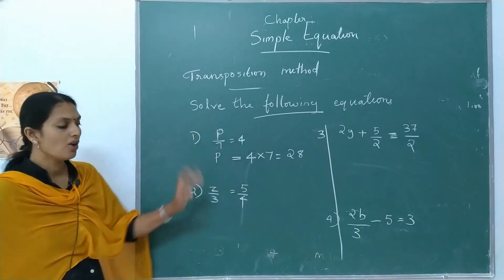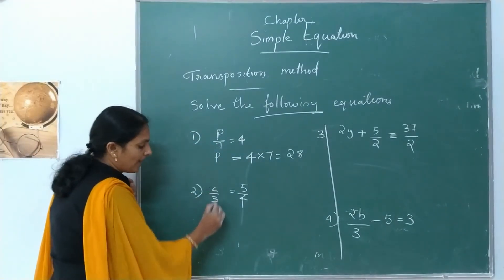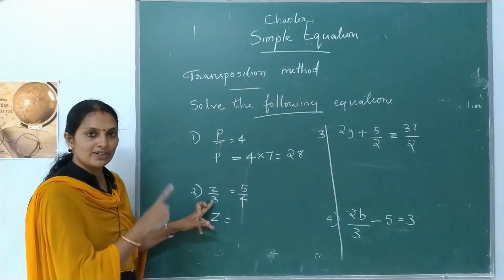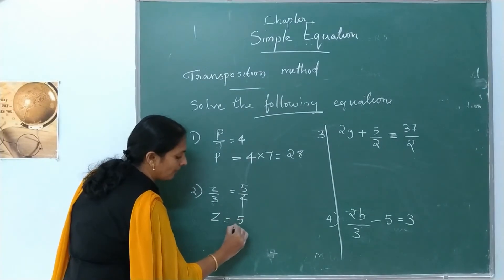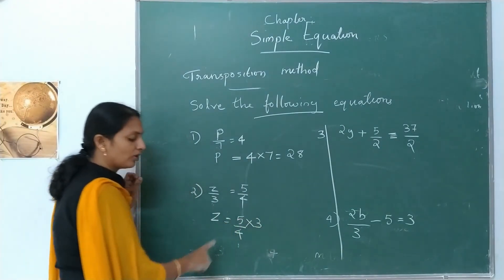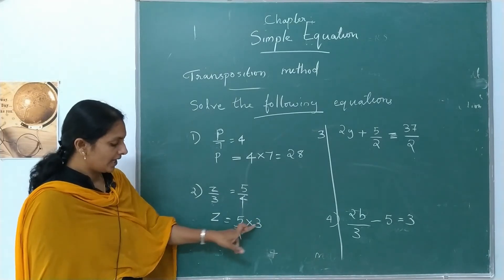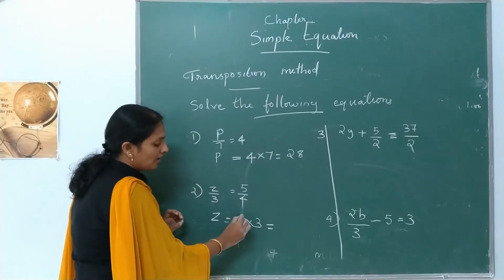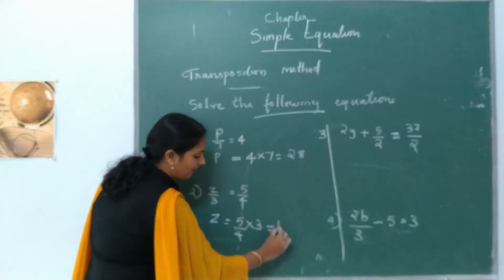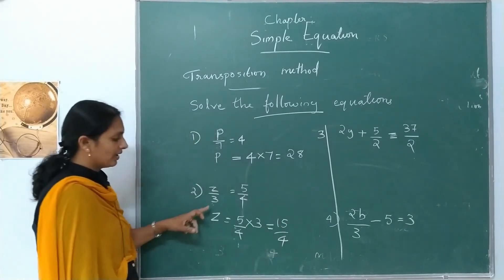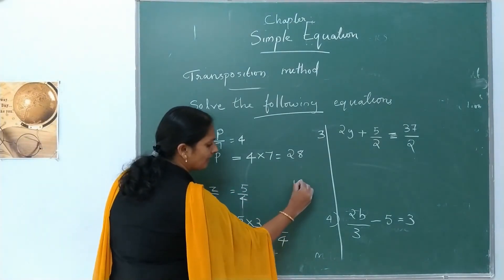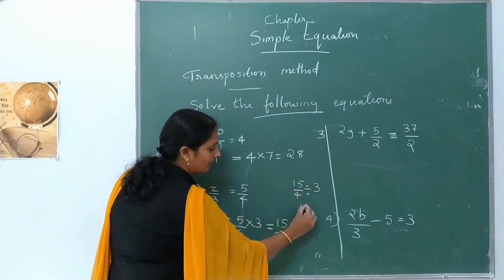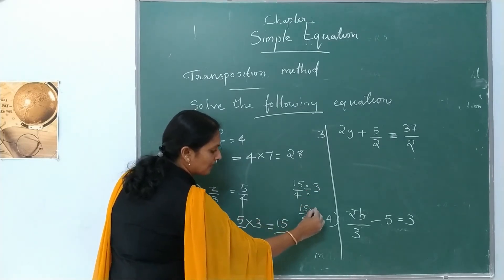Next one: z divided by 3 is equal to 5 by 4. Transpose 3 — division becomes multiplication. So z is equal to 5 by 4 multiplied by 3. When multiplying a fraction by a whole number, multiply the numerator: 5 into 3 is 15. So z equals 15 by 4. Dividing 15 by 4 by 3 reciprocally gives 5 by 4.